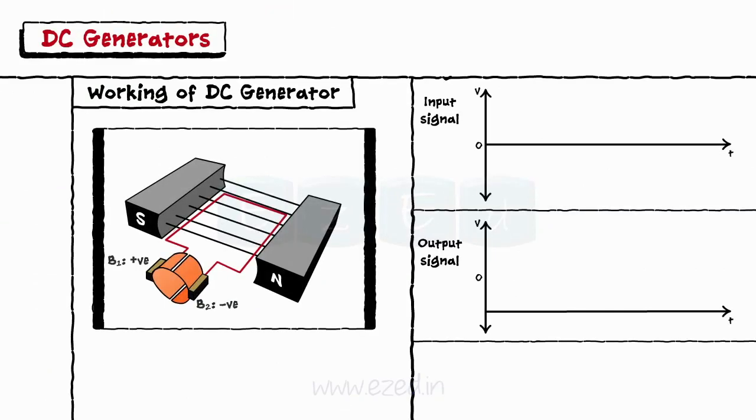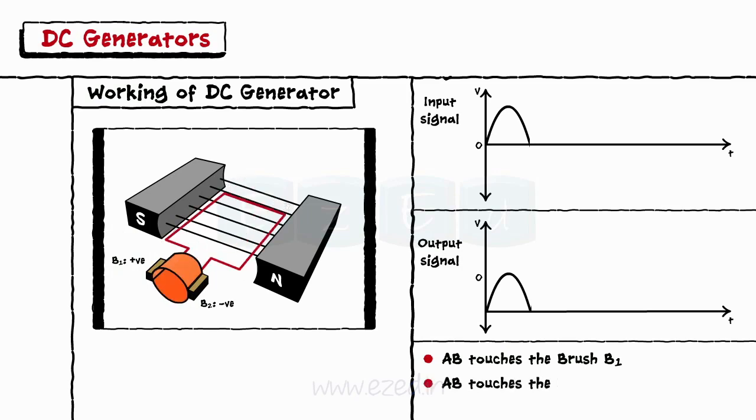Now, during the positive half, conductor AB touches the brush B1. Thus, B1 attains the positive charge giving the positive cycle at the output. When AB touches the brush B2, B2 attains the positive charge providing the positive cycle again. The commutators are so designed that for every cycle the current will flow out towards the circuit given positive output only.